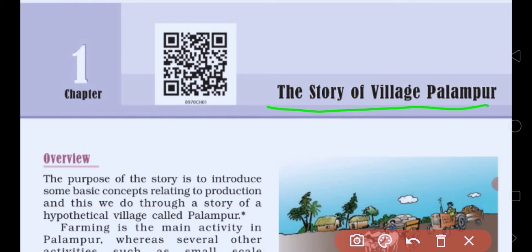In Economics we study how any goods and services are produced, and which factors are responsible for that. It covers all the activities done by human beings for the production of goods and services, and the production process is done for earning their livelihood. With the help of this story, we will discuss the production process and the different factors responsible for production.